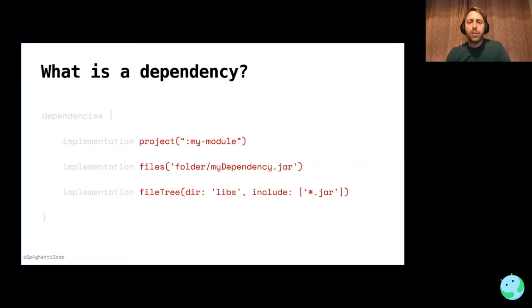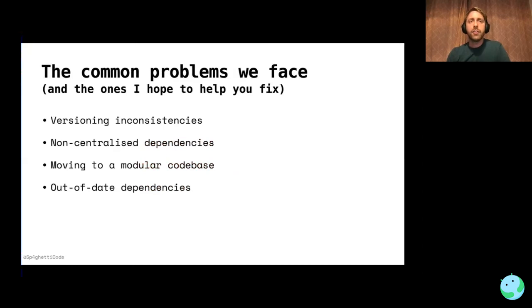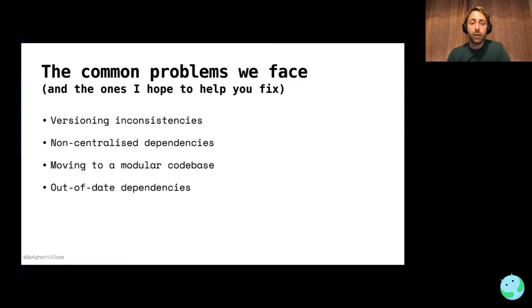So that's a very quick overview of what a dependency is. But what problems do we face? I've tried to come up with the four main problems we face with dependencies in Android. The first is version inconsistencies, the second is non-centralized dependencies, the third is moving to a modular codebase, and finally, out-of-date dependencies. I'll talk through each one individually.